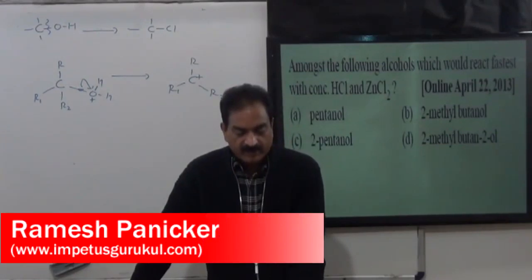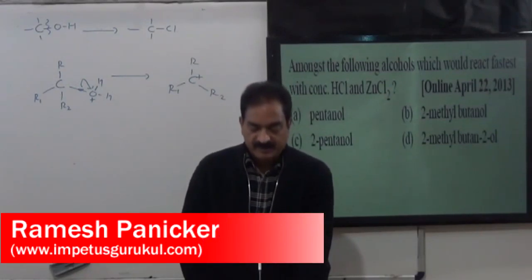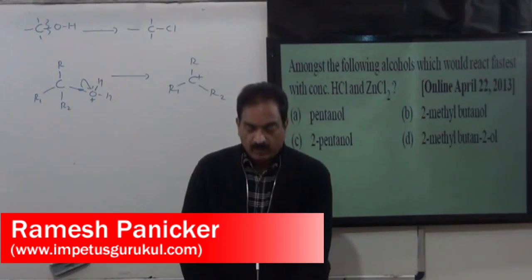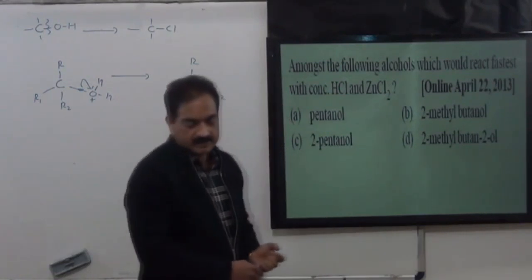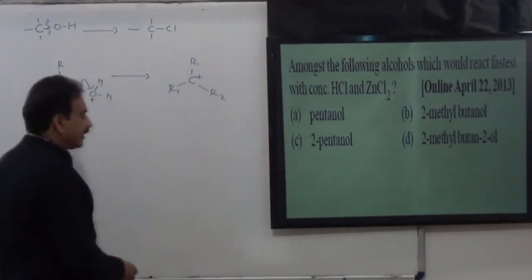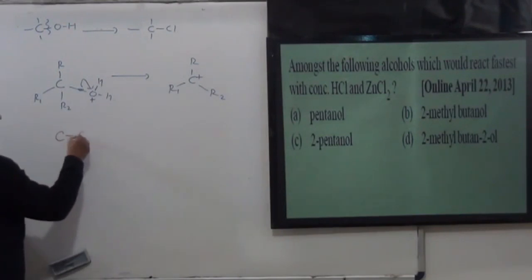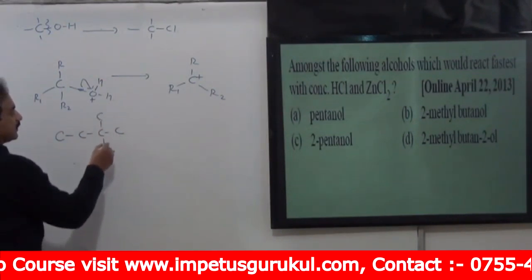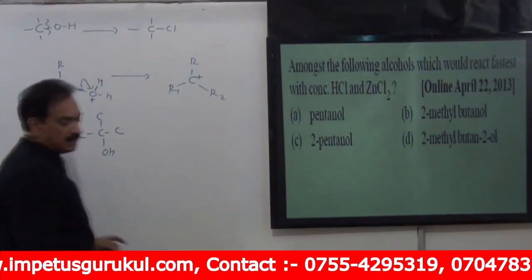Which alcohol reacts fastest with the same question? It is 2-methyl butane 2-ol because the fourth option is tertiary alcohol. 2-methyl butane 2-ol, this is it. So this is a tertiary alcohol.